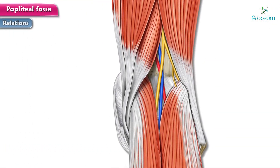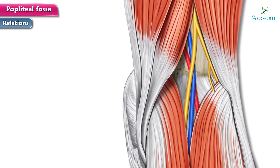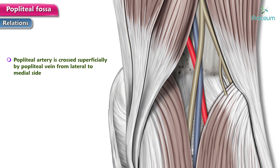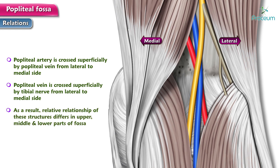The relationship of the tibial nerve, the popliteal vein, and the popliteal artery in the popliteal fossa includes that the popliteal artery is crossed superficially by the popliteal vein from the lateral to the medial side, which in turn is crossed superficially by the tibial nerve from the lateral to the medial side again. As a result, the relative relationship of these structures differs in the upper, middle, and lower parts of the fossa.